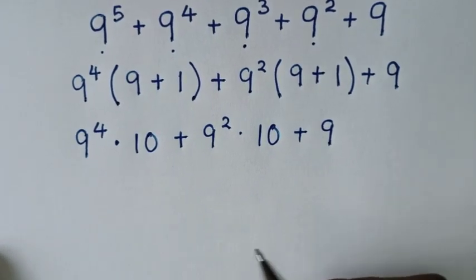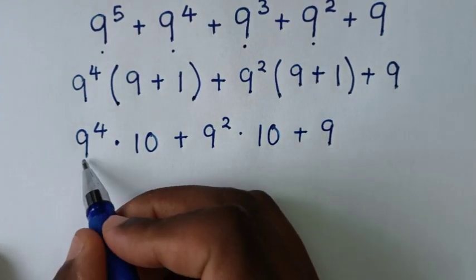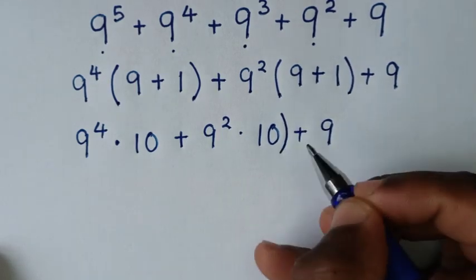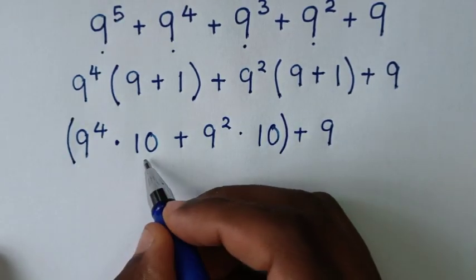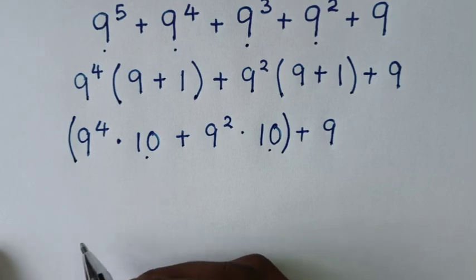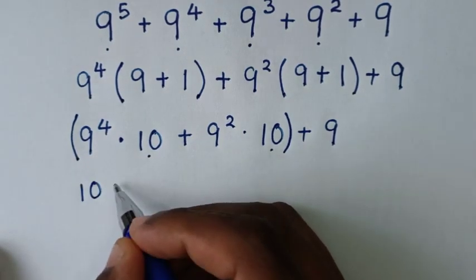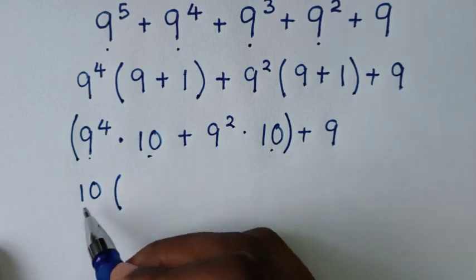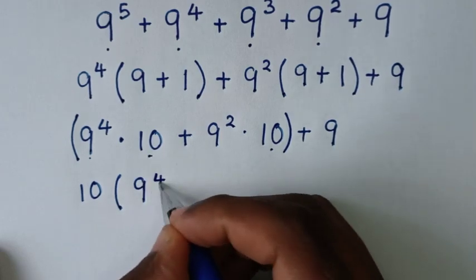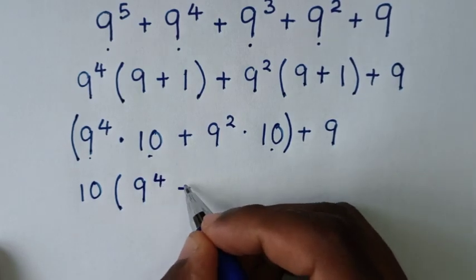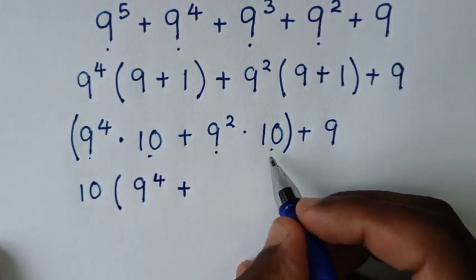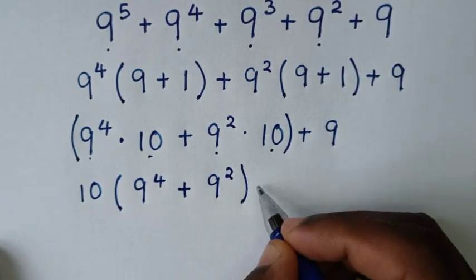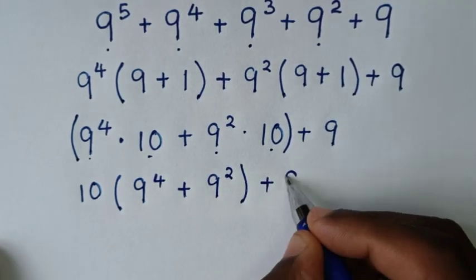Then in the next step, from here 9 power 4 times 10 plus 9 power 2 times 10 — 10 is common, so we will take 10 out of the bracket. Then 9 power 4 times 10 divided by 10 is 9 power 4. Then plus 9 power 2. Then plus this 9.